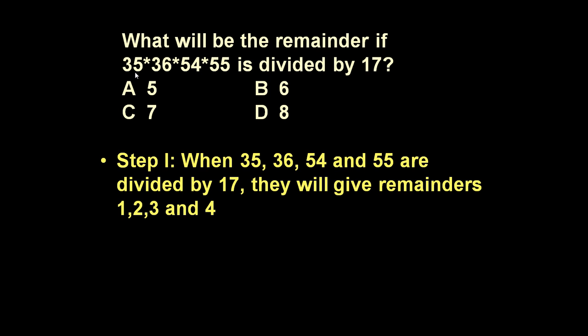You just determine the remainder when 35, 36, 54 and 55 are divided by 17 individually.